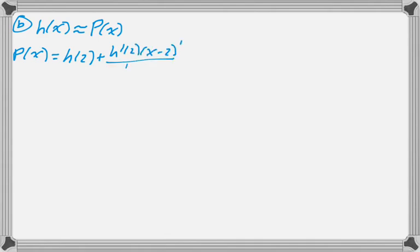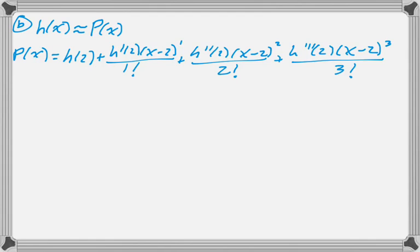Part b is almost the same question, except now you're going to use a third degree polynomial. So I'm going to call this polynomial p of x. I'm going to write it out in general, mostly just for your benefit. So it's h of 2 plus h prime of 2 times x minus 2 to the first over 1 factorial, plus h double prime of 2, x minus 2 squared over 2 factorial, plus h triple prime of 2, x minus 2 cubed over 3 factorial. Okay? And now fill in values from the table.